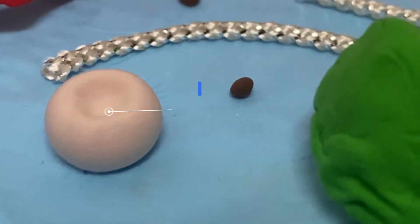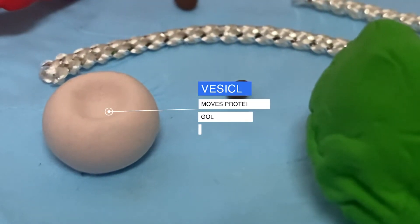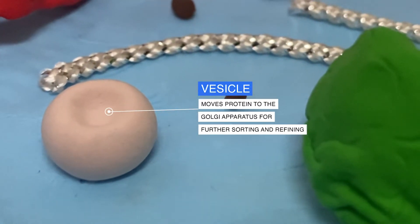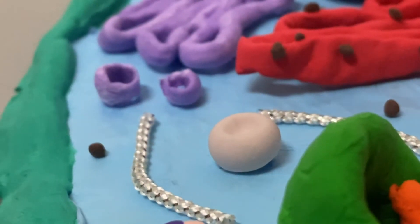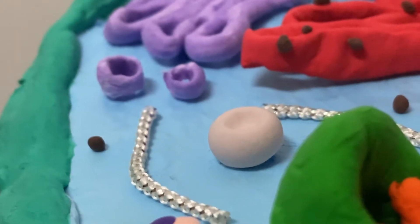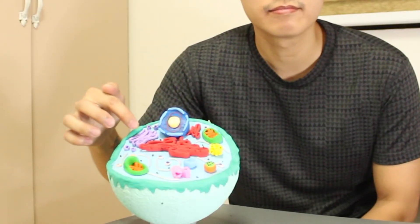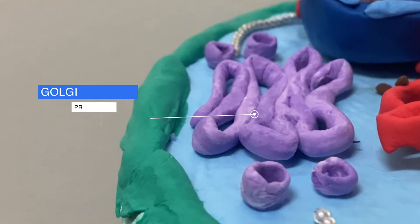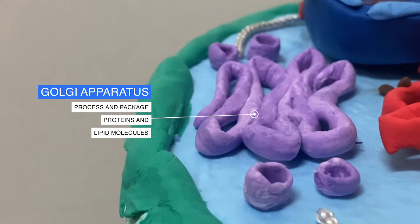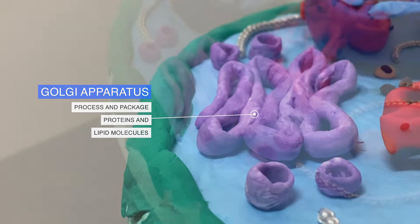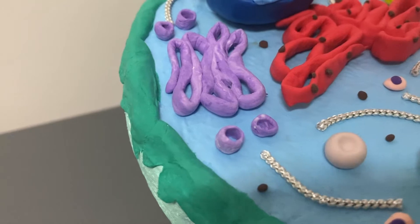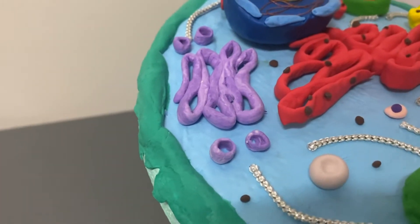The proteins that the ER produces will be transported by vesicles. Transport vesicles help move these proteins to the Golgi apparatus for further sorting and refining. The Golgi apparatus appears as a series of stacked membranes and helps process and package proteins and lipid molecules, especially proteins destined to be exported from the cell.